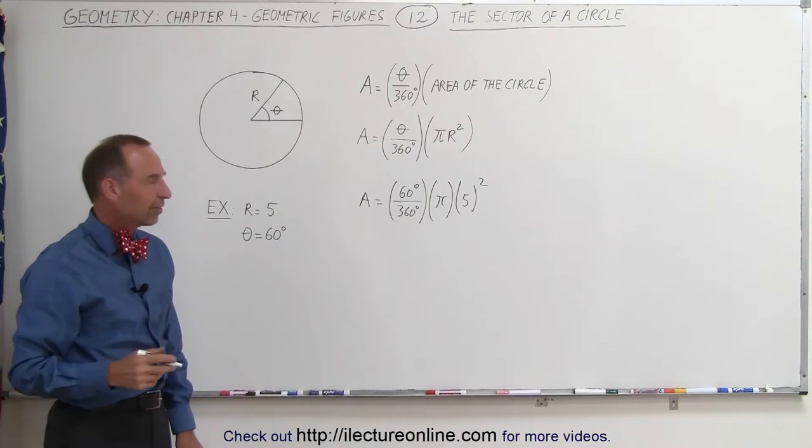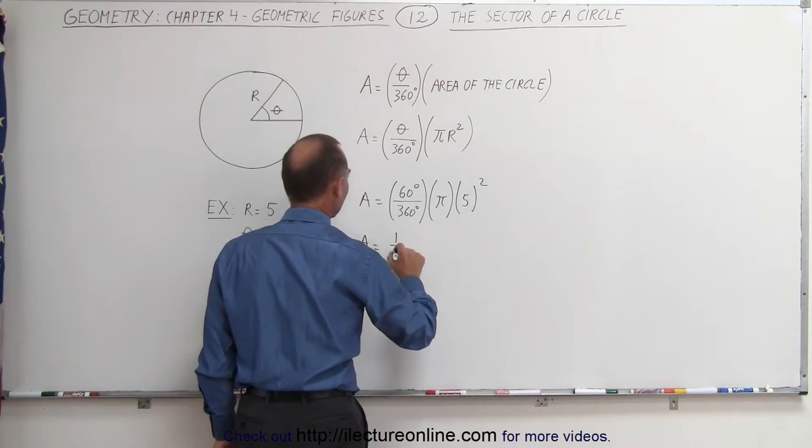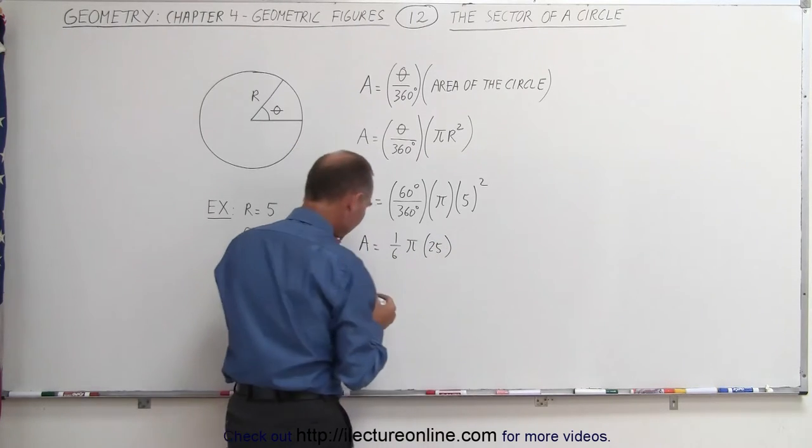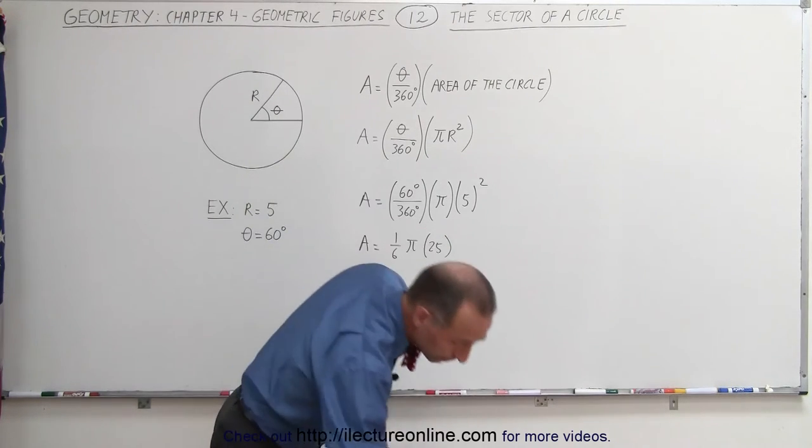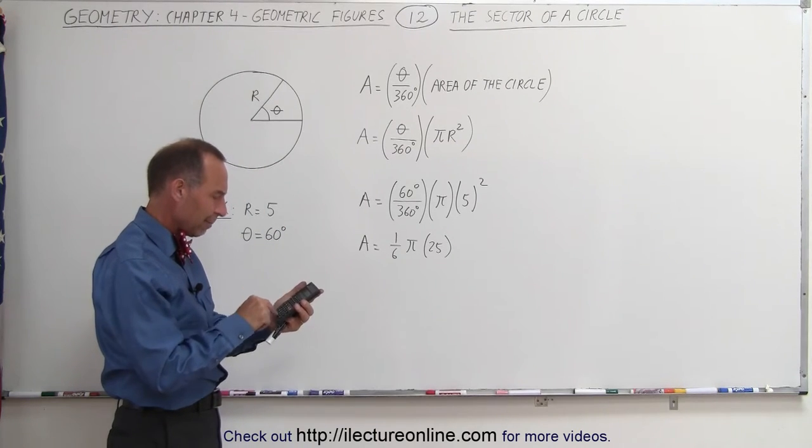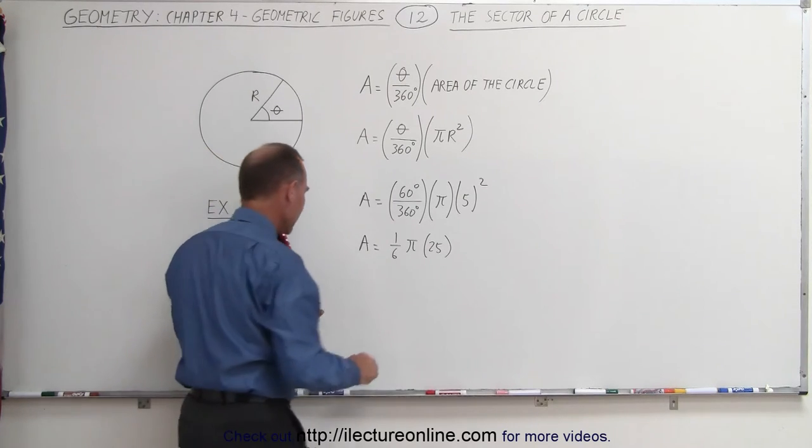60 divided by 360, that's 1 sixth, so we can say that A is equal to 1 sixth times pi times 25, and at that point you probably want to grab a calculator. 25 divided by 6 times pi, and that ends up being 13.09.